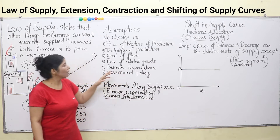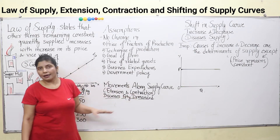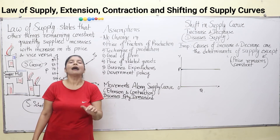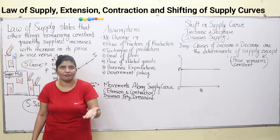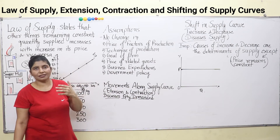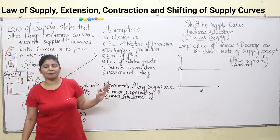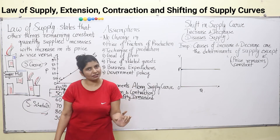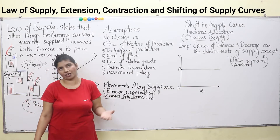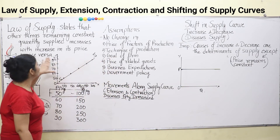Price of related goods remains the same — price of substitute goods and complementary goods do not change. Business expectations do not change. If in the market the expectation is bullish or bearish, it will not change. Bullish means higher expectations — expectations of higher profit and higher demand. Bearish means lower demand and lower expectations, a depression-like condition. Then, government policy also does not change. Only then will this law operate.